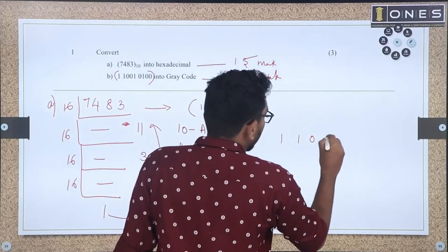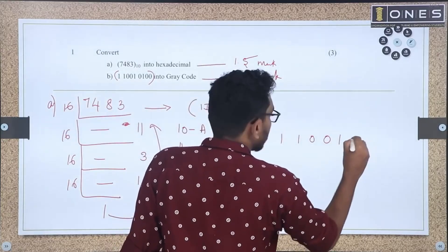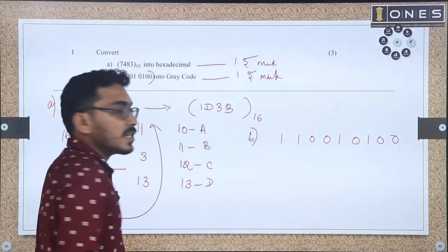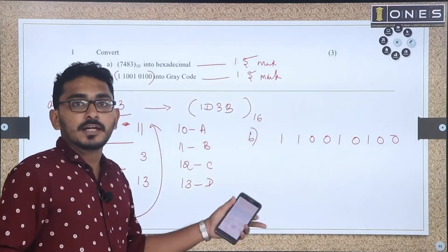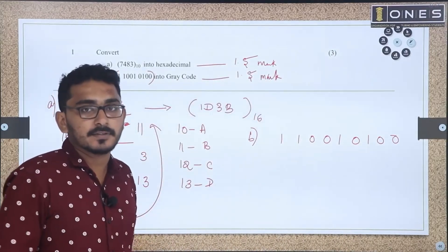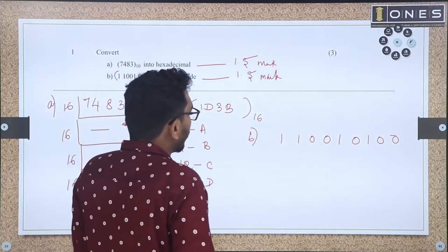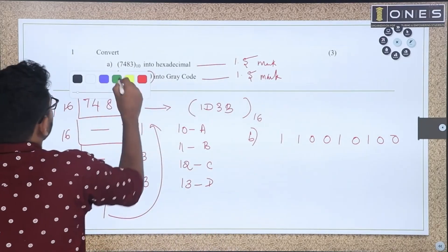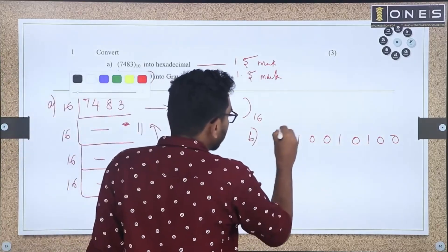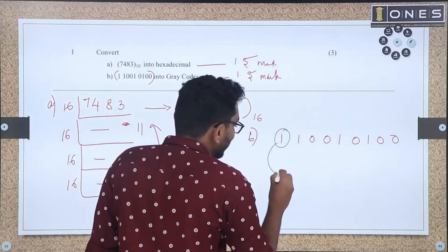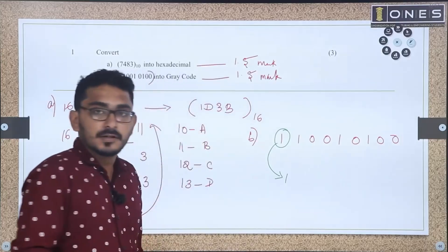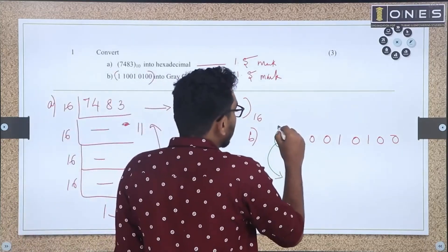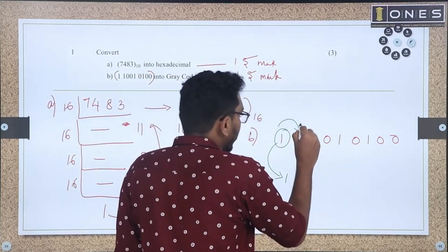The binary number 1110110100 is to be converted to Gray code. To begin, the Most Significant Bit (MSB) of the Gray code is the same as the MSB of the binary number. Then, each subsequent bit is obtained by adding consecutive binary bits.